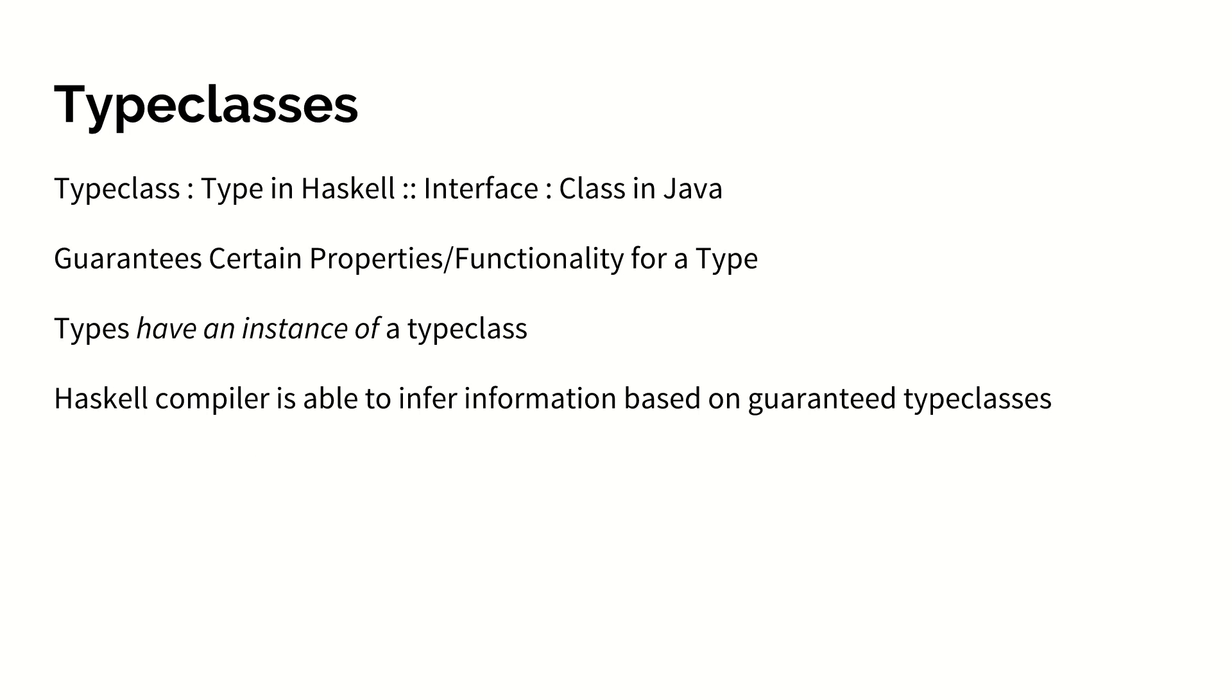Type classes in Haskell are to types as interfaces are to classes in Java. While this comparison is not 100% accurate to the root principles, it conveys some of the most important information. A type class guarantees certain properties or functionalities about a type. However, we don't really say that types implement a type class. A type has an instance of a type class. Furthermore, the Haskell compiler is able to infer information based on type classes that it knows a variable or expression has. But more on that in the next video.